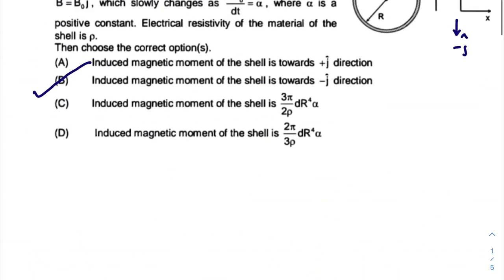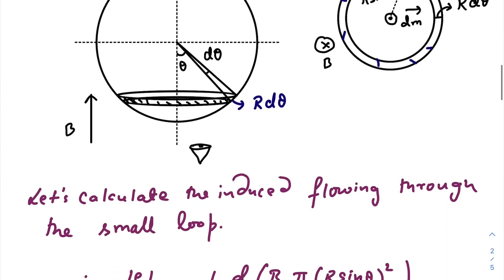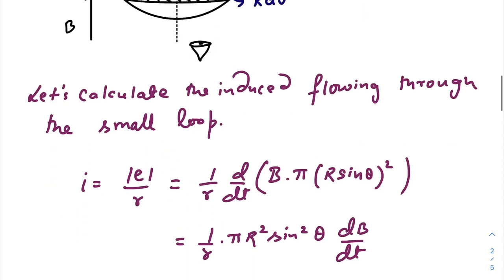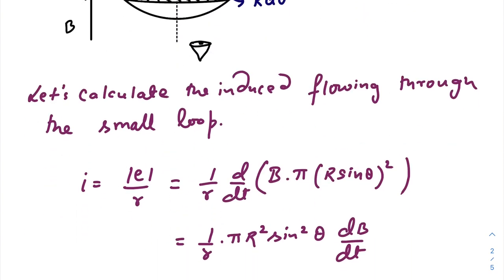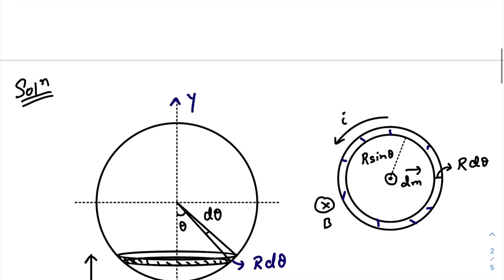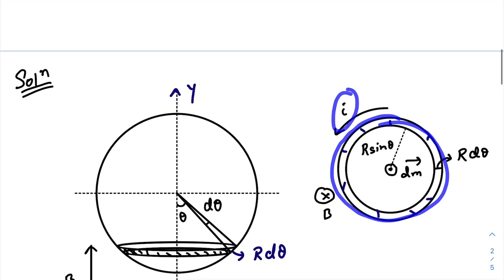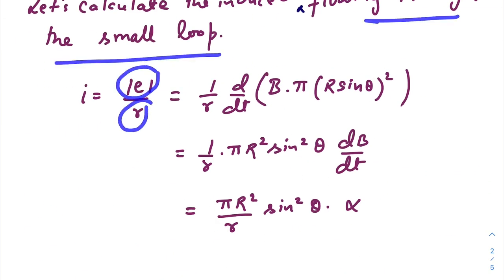Not a big deal. So let's calculate the induced current that is flowing through the small loop, through this small loop. So i will be the induced emf divided by the resistance. So one by R, induced emf would be the rate of change of magnetic flux through that loop.